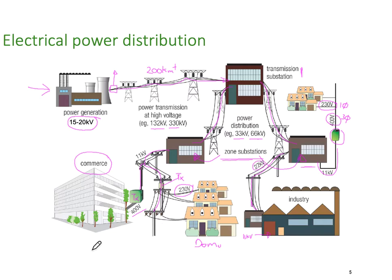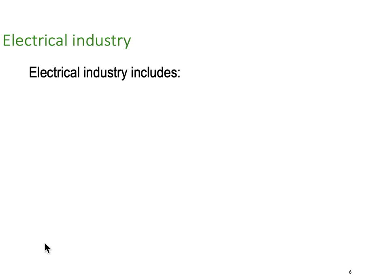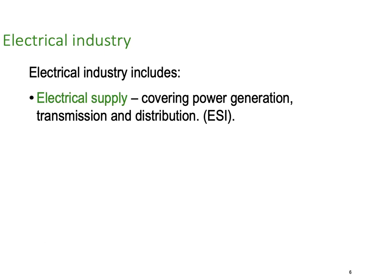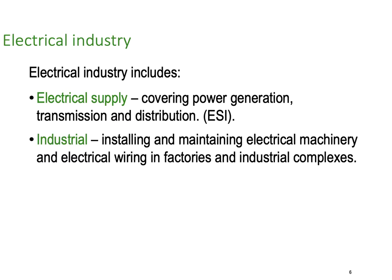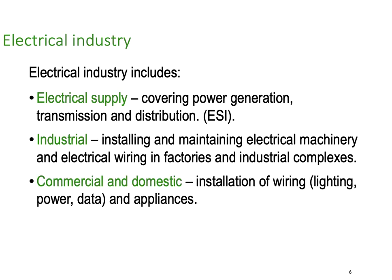The electricity supply industry covers generators, transmission, distribution — the ESI. We go out into industrial installations maintaining electrical machinery, electrical wiring, factories, and larger industrial complexes. Then we have commercial and domestic: installation of wiring for light, power, data, and appliances. Commercial might be things like bakeries or even small factories. Domestic, obviously, is people's houses, homes, and apartment blocks.